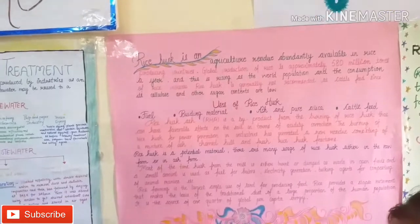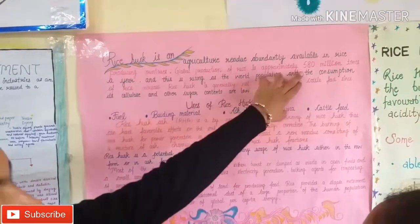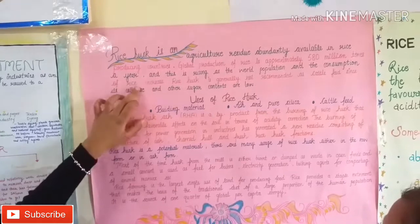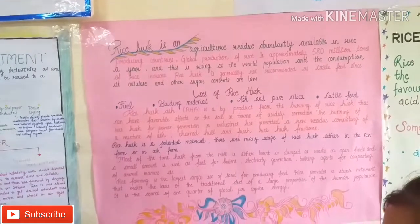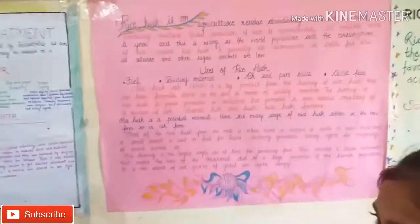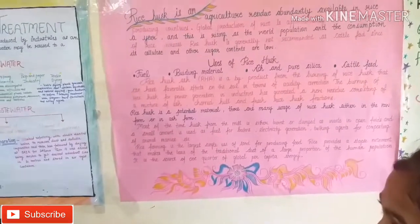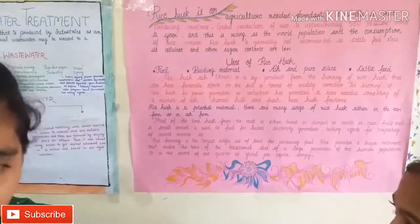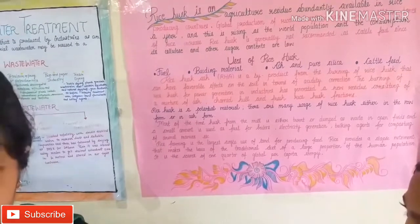Rice is produced at 580 million tons annually. We have used rice husks, which are agricultural waste, but if we use them, they are inexpensive and economical, so we can purify the water.